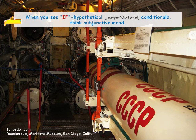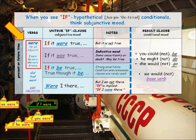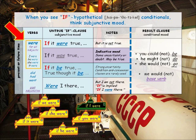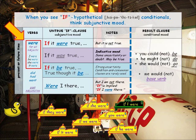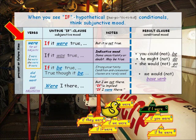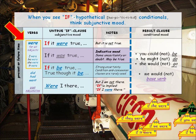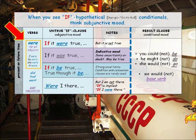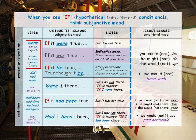When you see 'if' hypothetical conditionals, think subjunctive mood. For present or future time, use the past subjunctive form or simple past. However, for the verb 'to be,' use 'were' for all subjects — so we say 'if it were true.' Some people may say 'if it was true,' but this is only grammatically correct for the indicative mood. For past time, use the past perfect subjunctive: 'if it had been true.' For the clause 'had I been there,' the 'if' is implied.